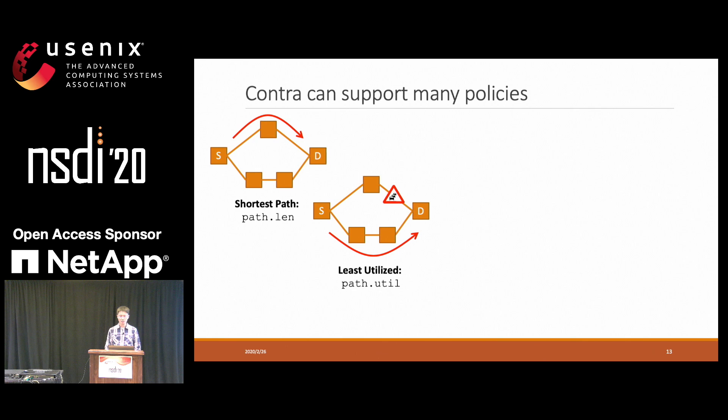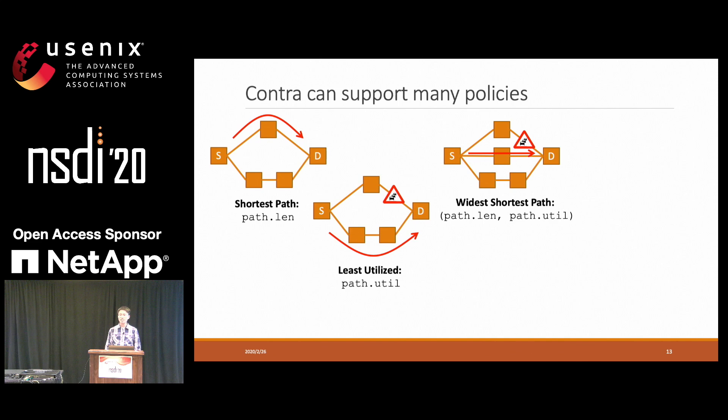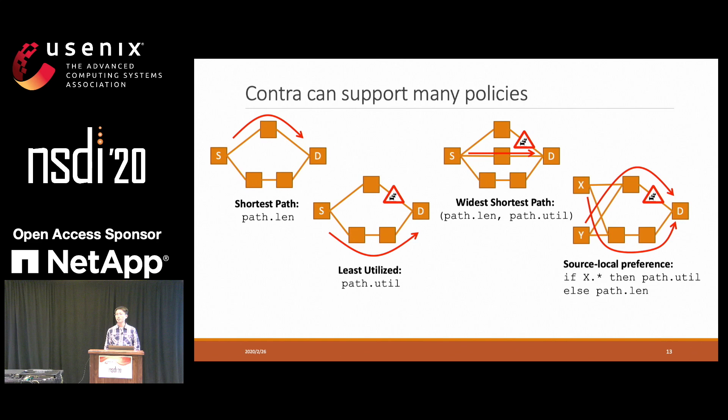Even more, a user can write path.len, path.util to specify a policy which will select the shortest path first, and then among all the shortest paths, pick the least-utilized path. With regular expressions, we can even specify different metrics for different types of paths. You can find more examples and discussions in our paper.